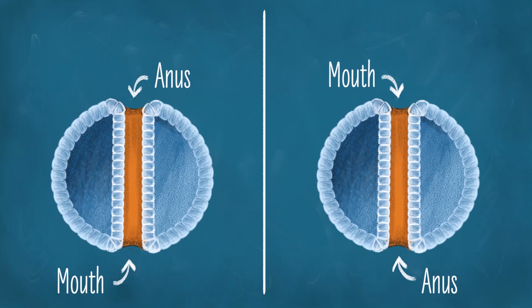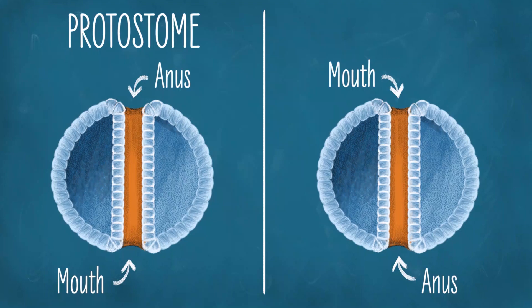Mouth-first development is called protostome development. The flatworm is clearly in this group, as it only has a mouth.